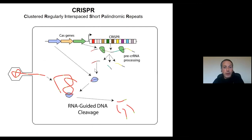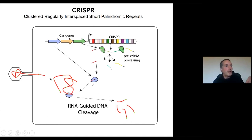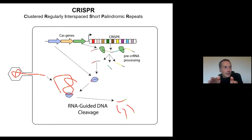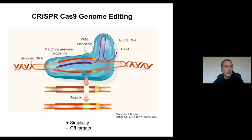Here, the only thing we need is a sequence that is equal to the sequence of the target region. We only need to synthesize one protein that is always the same — it's only the RNA that will change. The design of the RNA is quite simple because it will be exactly the same sequence that we want to cut. That's the principle.